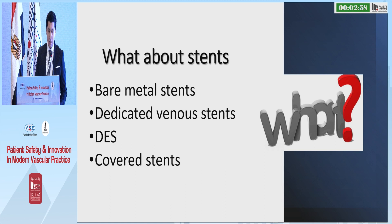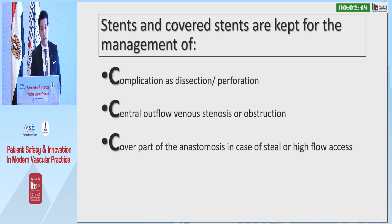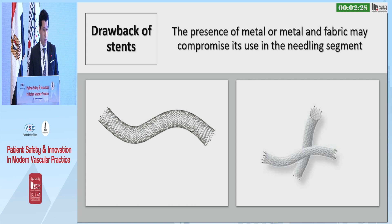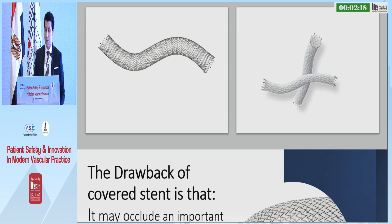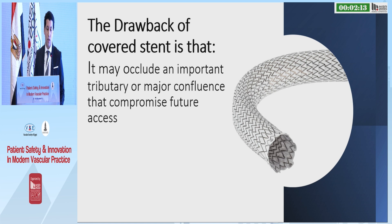What about stents? Bare metal stents, dedicated venous stents, drug eluting stents, covered stents. Stents and covered stents are kept for the management of the three Cs: complications such as dissection and perforation, central outflow venous stenosis or obstruction, and covering parts of anastomosis in case of steal or high flow access. Drawbacks: the presence of metal, or metal and fabric, may compromise use in the needling segment. Also, covered stents may occlude an important tributary or major confluence that compromises future access.